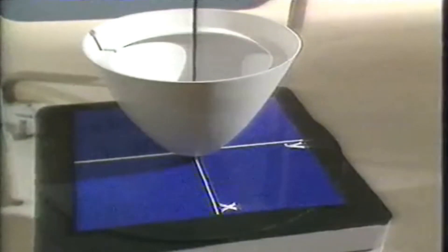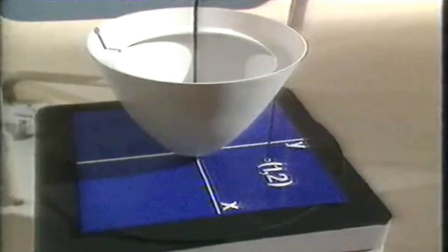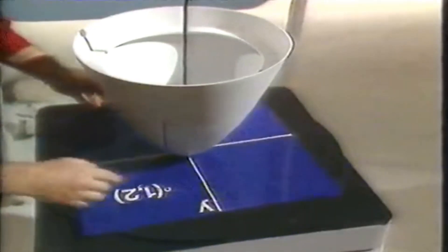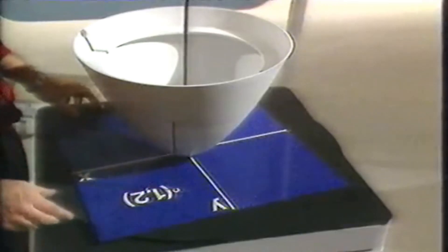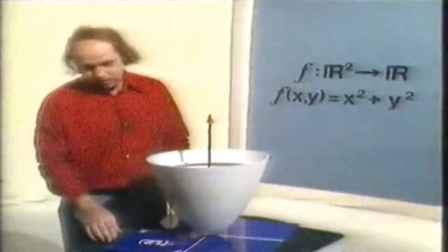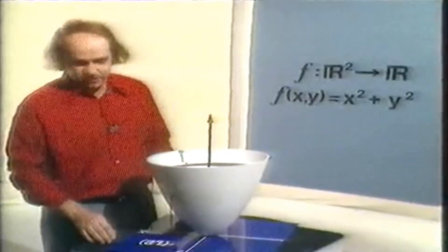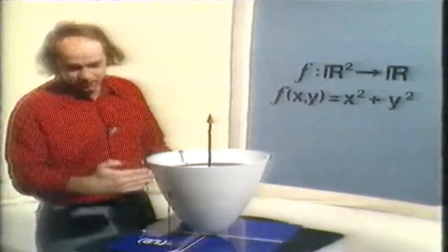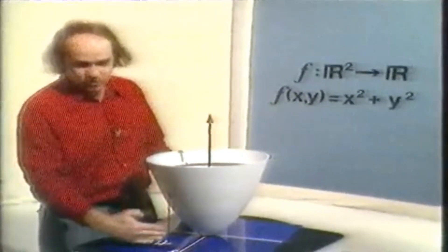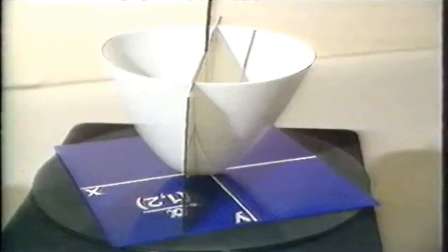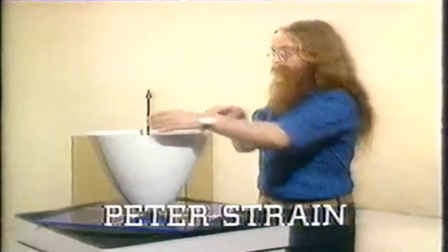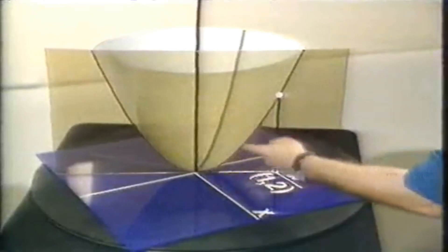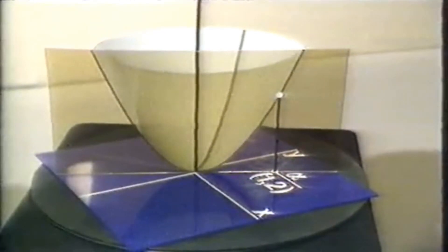We're going to look at the point (1, 2) in its domain. The function maps this point to a point on the surface, a vertical distance 1² + 2² = 5 units above the x-y plane. There's a quick way of getting an R-to-R function, and that is to slice the surface by a vertical plane through this point. Here's our general slice, and if I turn the model around and remove this part, we can see the cross-section — it's a parabola, which we're going to think of as the graph of a function from R to R.